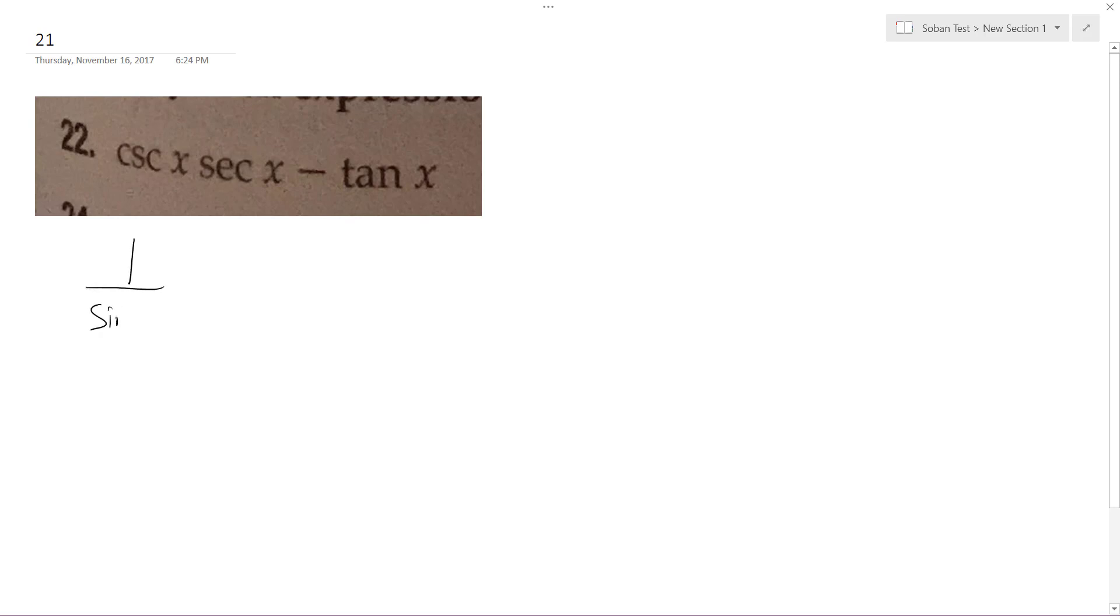So cosecant is the same thing as 1 over sine of x, secant equals 1 over, well they're multiplied together so I just put them in the same denominator, 1 over cosine x, minus tangent which is sine of x over cosine x.